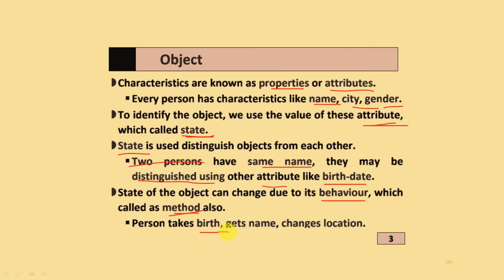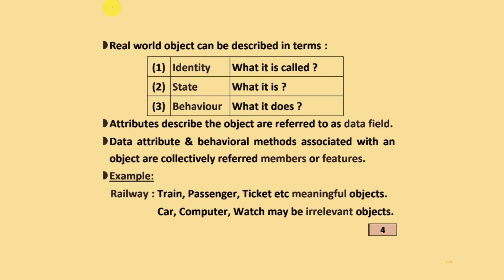Person takes birth, gets name, changes location. In the real world, object can be described in these terms: identity is what it is called, state is what it is, and behavior is what it does.